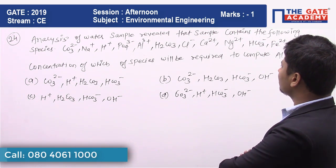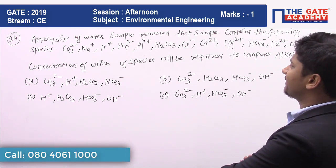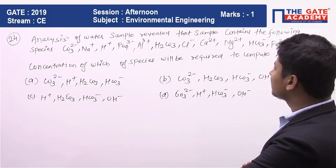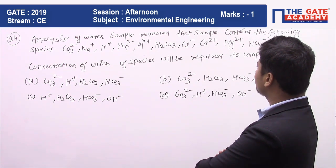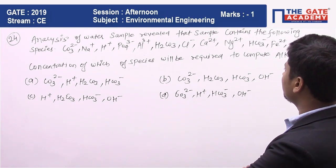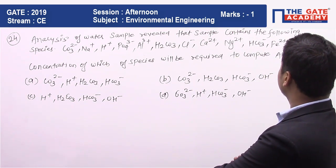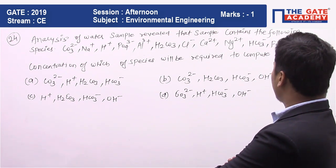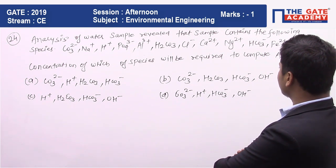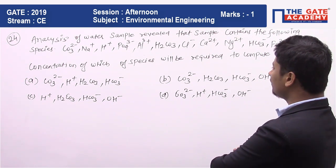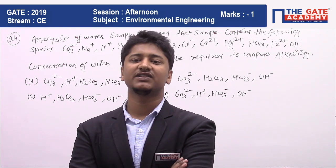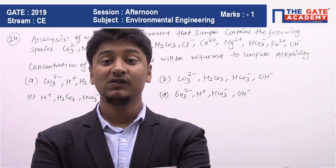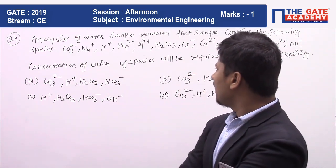Analysis of a water sample revealed that the sample contains the following species: CO₃²⁻, Na⁺, H⁺, PO₄³⁻, Al³⁺, H₂CO₃, Cl⁻, Ca²⁺, Mg²⁺, HCO₃⁻, Fe²⁺, and OH⁻. The concentration of each of these species will be required to compute alkalinity. So what they are asking is: which species are required to compute alkalinity in water?